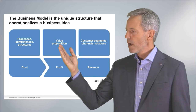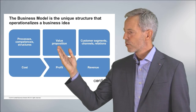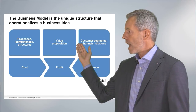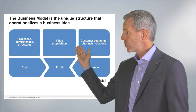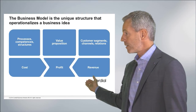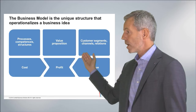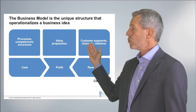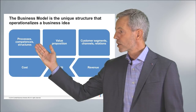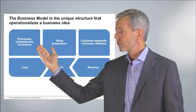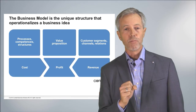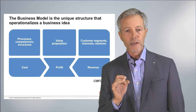The business model says something about what you are going to offer — the value proposition — to whom, the customer segments, how you're going to reach them through the channels, how you're going to keep relationships with them, and how you're going to get paid — where the revenues come from. Then on the left side, how — with what structures, processes, competencies, and systems — at what cost are you going to deliver this value proposition in order to be profitable?